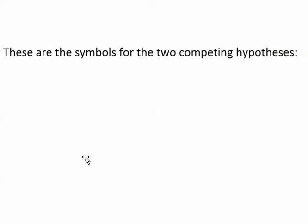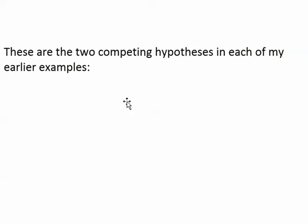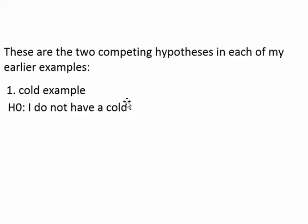The null and alternative actually have symbols. In statistics, the symbol for the null hypothesis is H0 (or HO), and the symbol for the alternative hypothesis is H1. In my cold example, H0 is 'I don't have a cold,' and H1 is 'I do have a cold.' Those are the null hypothesis and the alternative hypothesis.